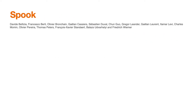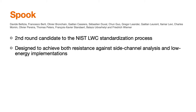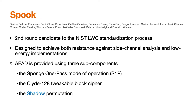Spook is an authenticated encryption scheme with associated data that was submitted to the NIST lightweight crypto competition, and it is currently part of the 32 candidates that made it to the second round. It was designed to achieve both resistance against side channel analysis and low energy implementations. It has three sub-components: the Sponge One Pass mode of operation, a tweakable block cipher, and the Shadow permutation, which comes in a 512-bit version and another one of 384 bits.